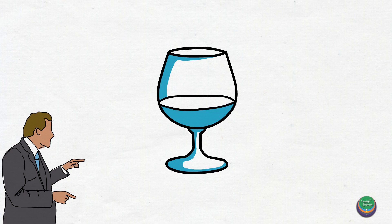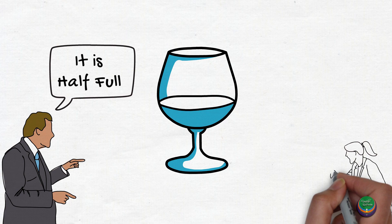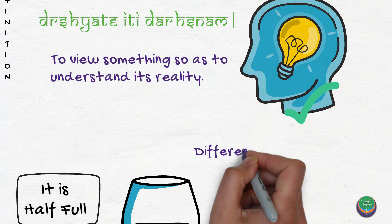Let us recollect the famous glass half full or half empty question. The purpose of this question is to demonstrate that the situation may be seen in different ways depending on one's point of view. These different points of view of people are called as darshanas.